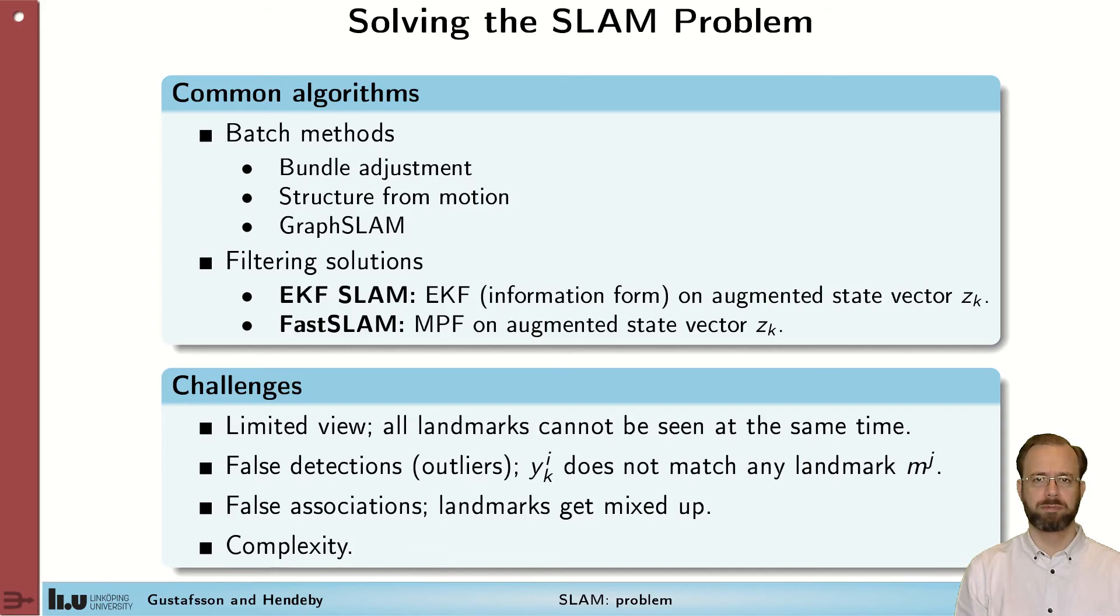Common methods to approach the problem is to batch the thing. So you look at the whole trajectory and all the measurements at the same time, and then try to solve the thing based on numerical optimization. Common methods to do this are bundle adjustment or structure from motion, which are two vision-based solutions to this. Another interesting immersion that's been popping up lately is graph SLAM, where the whole SLAM problem is posed as a probabilistic graph, from which a lot of different optimization methods can be applied to get the solution.